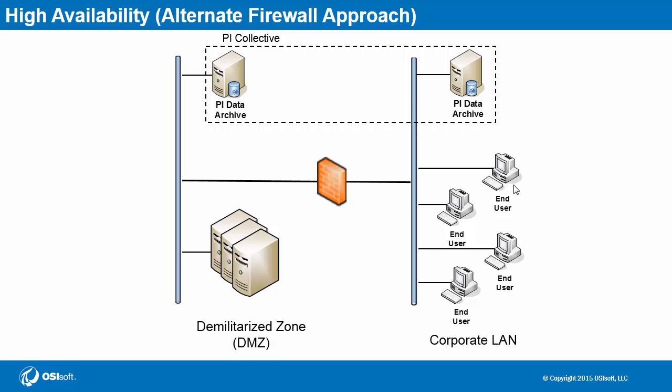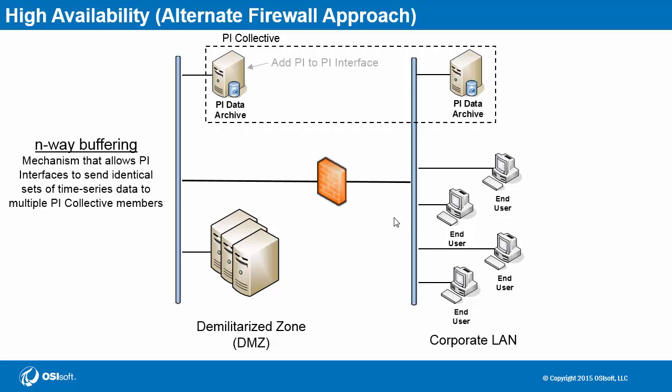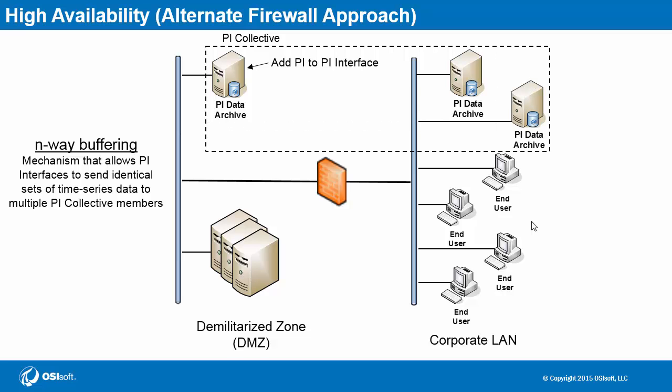This PI Data Archive is still part of the PI Collective, so it'll be synced with any configuration changes. The PI Interfaces are responsible for sending identical sets of data to all PI Collective members through a process called n-way buffering. In our setup, we'd have to allow multiple PI Interfaces to cross the firewall to feed data to this PI Data Archive. But a simpler approach is to set up a PI to PI Interface, which sends data from one PI Data Archive to another, greatly simplifying the diversity of traffic through the firewall. One last addition could be to add one more PI Data Archive on the corporate network, providing redundancy for users in case one of the PI Data Archives in the corporate network is unavailable.